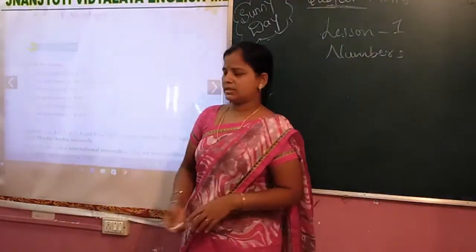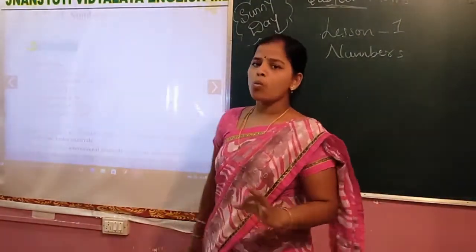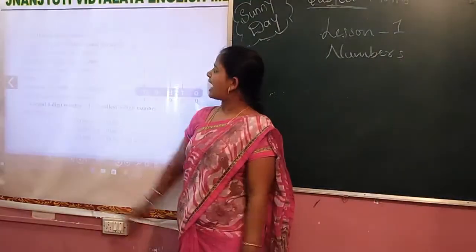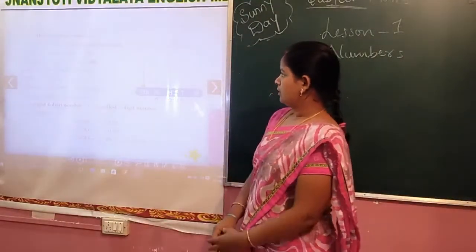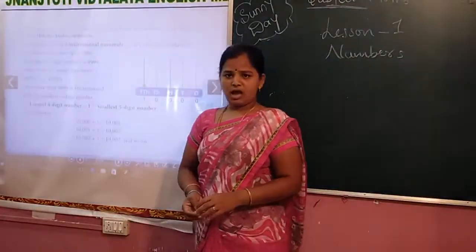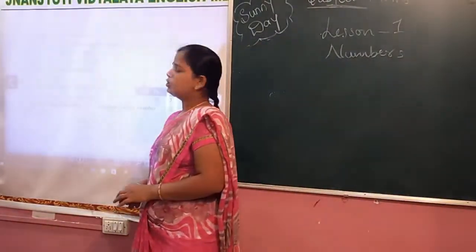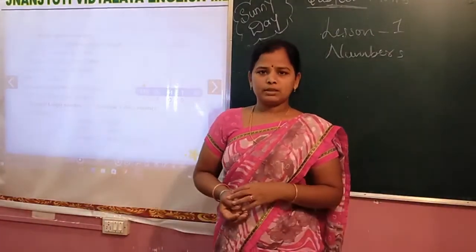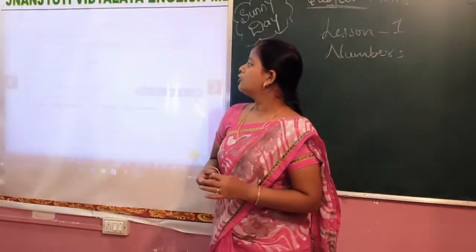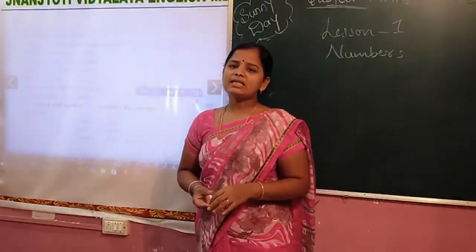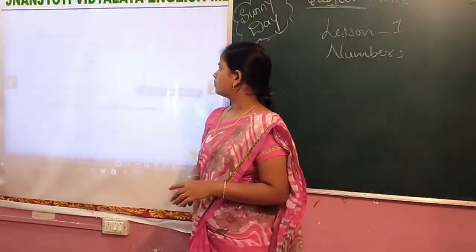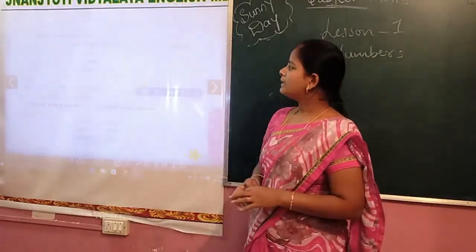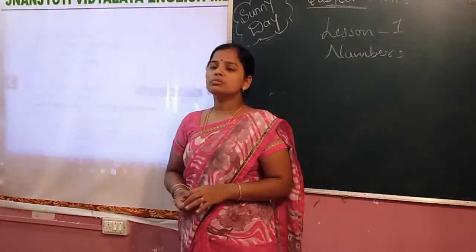The digits 0, 1, 2, 3, 4, 5, 6, 7, 8, and 9 are used to form numbers. These are called the Hindu-Arabic numerals. Numerals means numbers — these are the numbers we commonly use. They are also called international numbers and are used worldwide. That's why we call these digits international numerals.